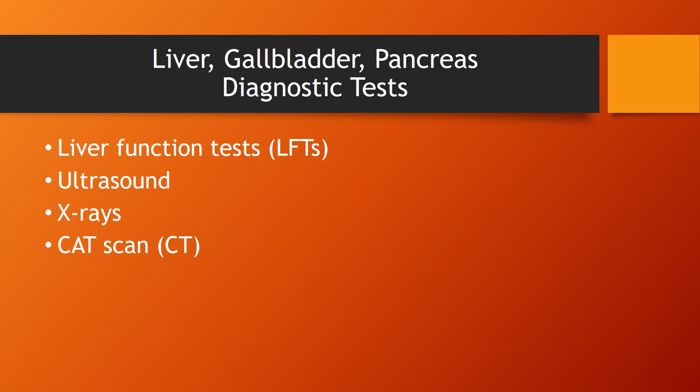Diagnostic tests for the liver, gallbladder, and pancreas include: a liver function test to assess whether the liver is functioning properly. An ultrasound evaluates the gallbladder and pancreas for their size, shape, and position. An X-ray shows the presence of gallstones, tumors, and gallbladder function. A CAT scan allows us to visualize the gallbladder and pancreas and to diagnose hepatic and pancreatic cancers. So the CAT scan is used when looking for cancer, while X-ray and ultrasound give us visualization of gallstones or the organs themselves.